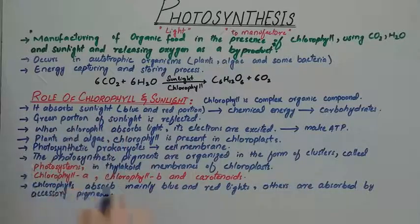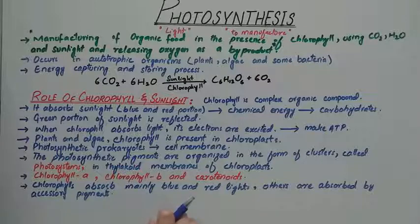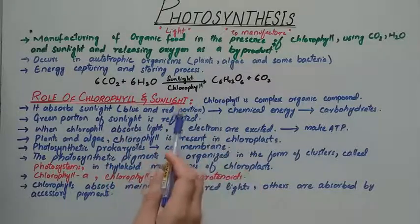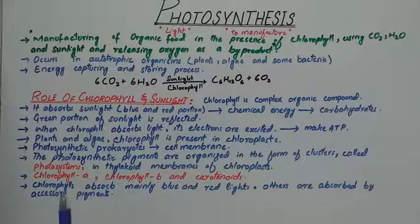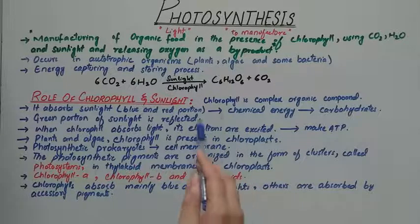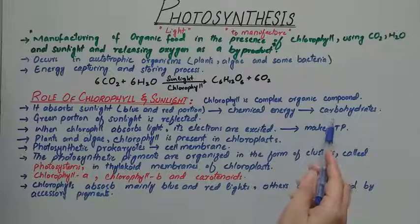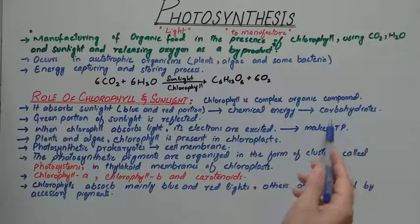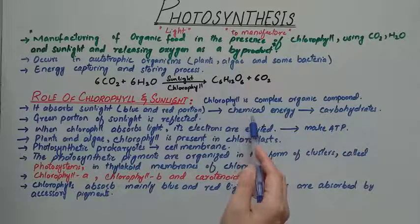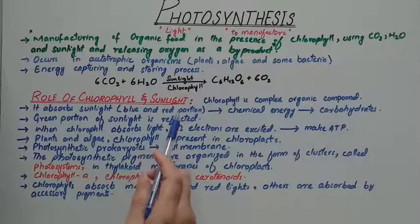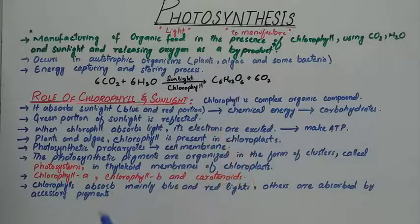What is the role of chlorophyll and sunlight in photosynthesis? Chlorophyll is a complex organic compound. It absorbs sunlight — specifically the red and blue portions of light. It then converts this into chemical energy, which is used for the formation of carbohydrates, meaning glucose. The green portion of sunlight is reflected, and due to this reflection, plants appear green to us.